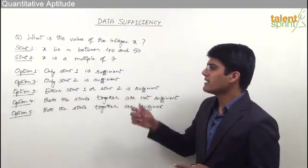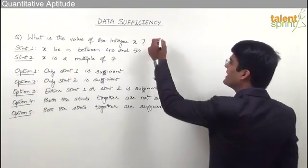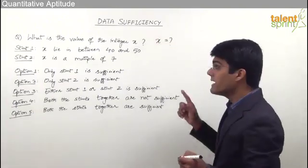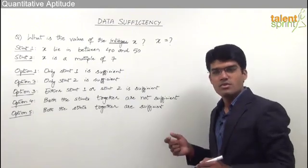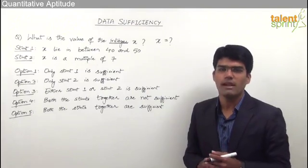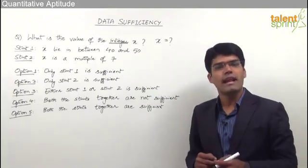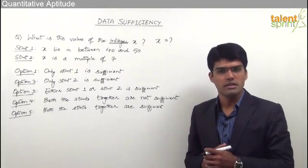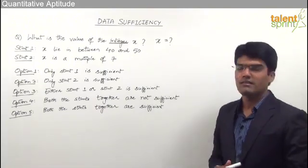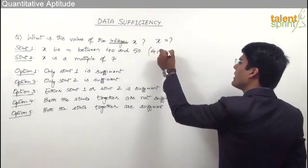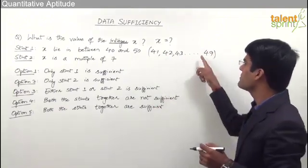Let us now try to solve this question. The question says what is the value of integer x — we need to find one specific integer value of x. Statement one says x lies between 40 and 50. The integers between 40 and 50 are 41, 42, 43 and so on up to 49. So from statement one, x can be 41, 42, 43 ... up to 49, and these are all the possible values of x from this statement.